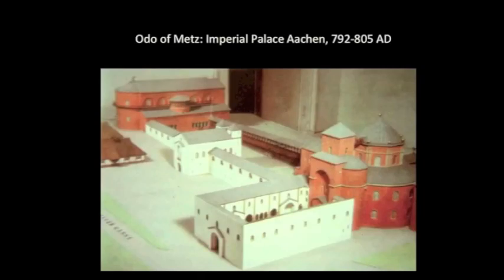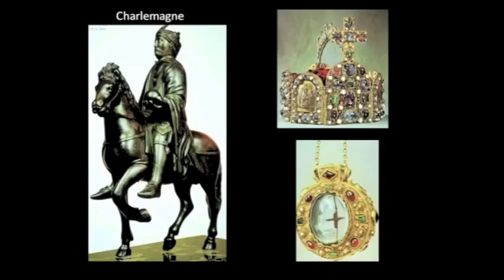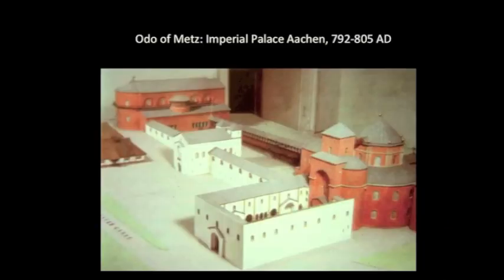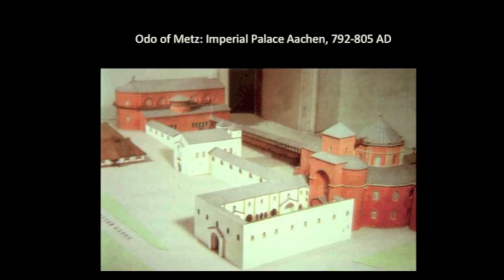When it comes time for Charlemagne to build a palace, he builds it in Aachen, which is in present-day Germany. He has an architect called Odo of Metz, and a lot of the ideas about the palace of Charlemagne pull from Roman precedent. But these Carolingian copies are always slightly off. It's a really nice little window into a culture to see what they copy and what they discard.